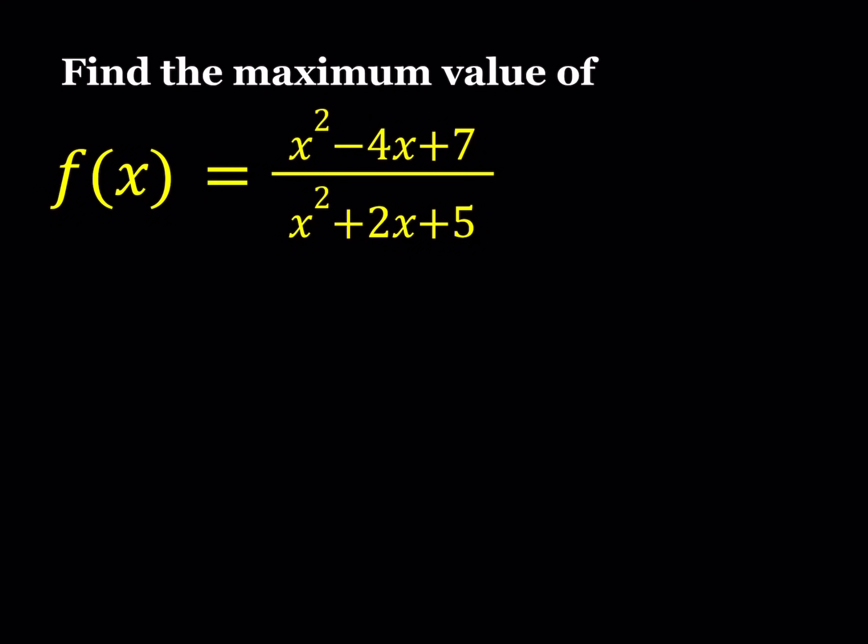Hello everyone. In this video we're going to be finding the maximum value of a rational function. f(x) is equal to x squared minus 4x plus 7 divided by x squared plus 2x plus 5, and we're going to find the maximum value of f(x).